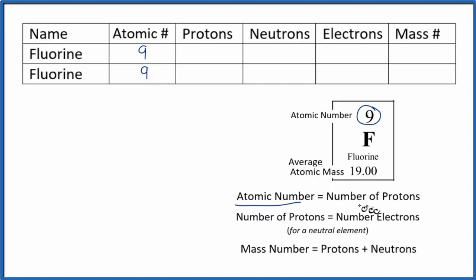The atomic number, that's the number of protons. So we'll always have 9 protons. That's what makes fluorine fluorine. It has 9 protons. If we have a neutral element, that means the protons will equal the electrons.